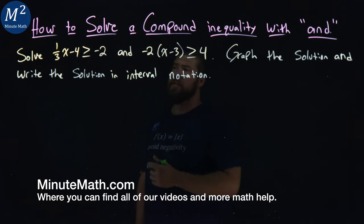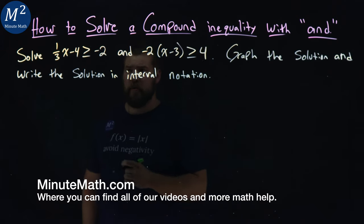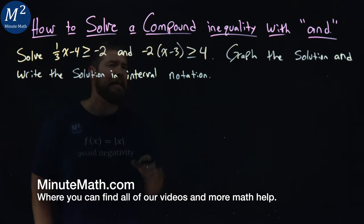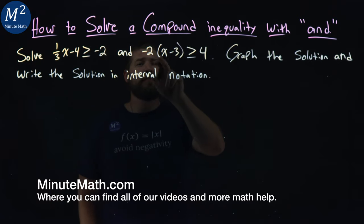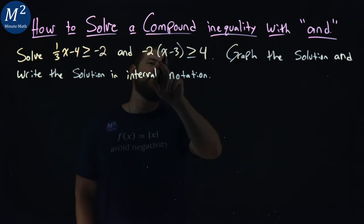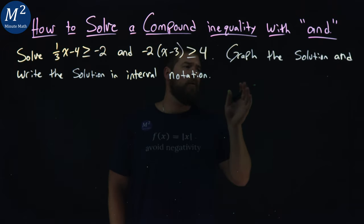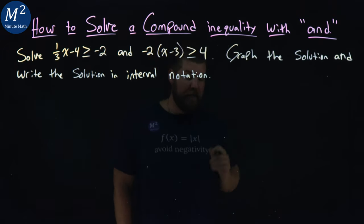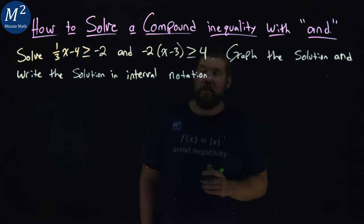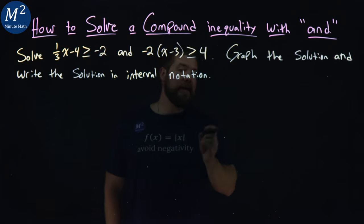We're given this problem: Solve ⅓x - 4 ≥ -2 and -2(x - 3) ≥ 4. Graph the solution and write it in interval notation. One tip from the beginning - this is a unique case, and we'll talk about it at the end, so stay tuned.